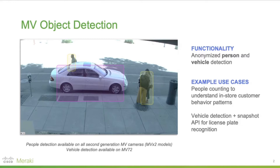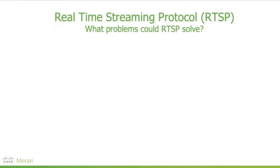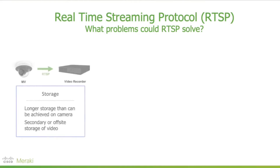However, recently we released a new functionality, which is called real-time streaming protocol, which essentially allows you to pull a video stream from any of our cameras and pass it through an external system. For example, you could take the video of a Meraki camera and constantly back it up to a local video recorder.